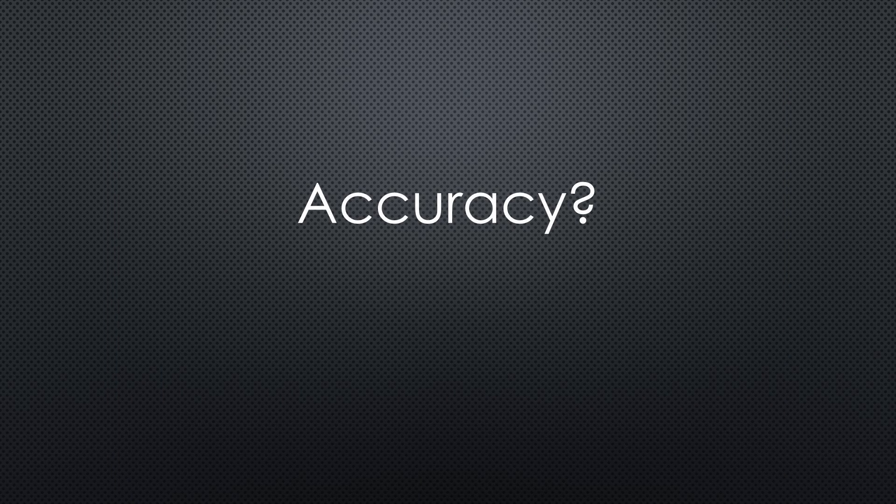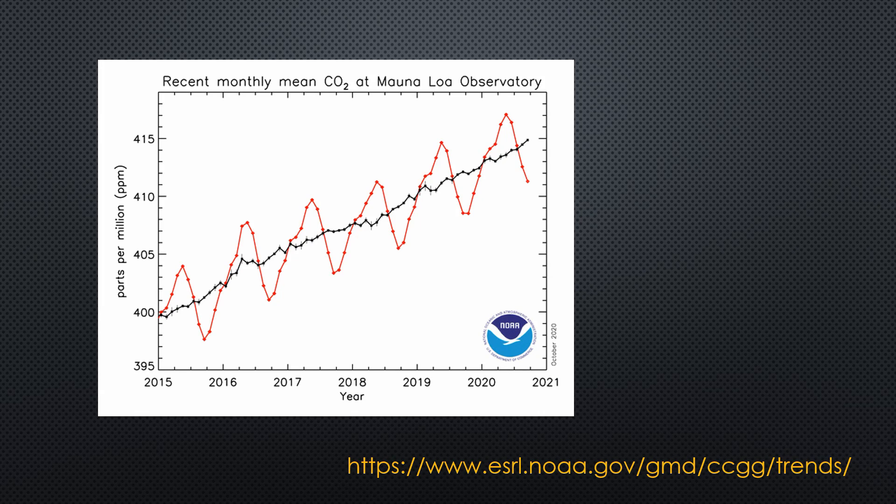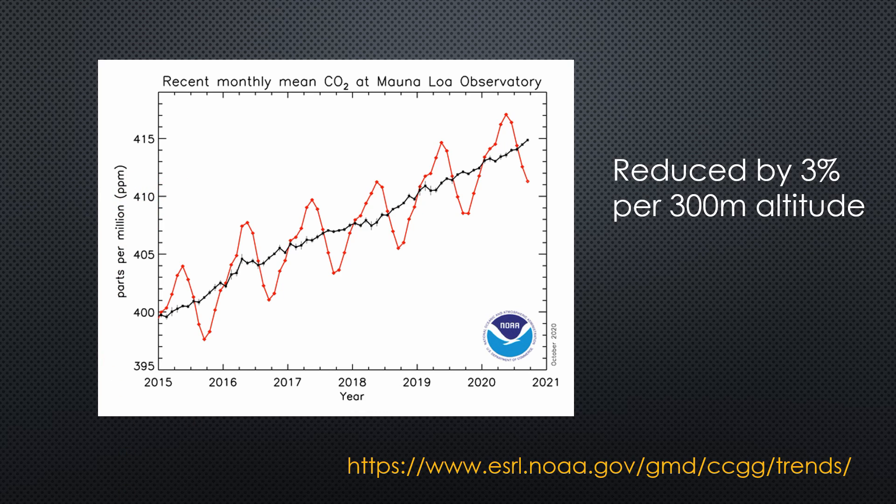The next question, which accuracy do we need for our purpose? One thing is essential. The outside CO2 concentration is around 410 ppm at sea level. It is reduced by 3% for every 300 meters altitude. So, it's easy to calibrate the sensor.